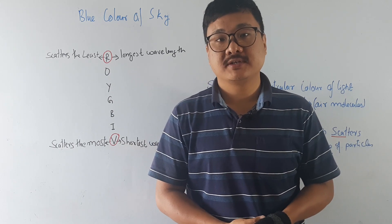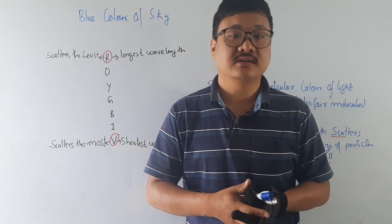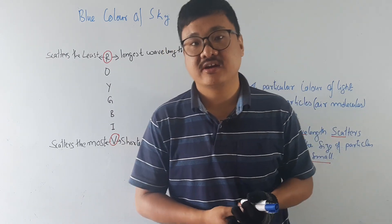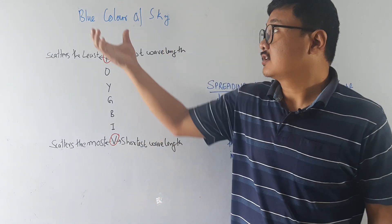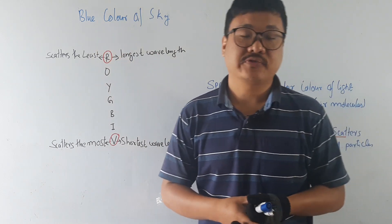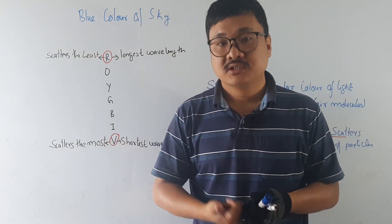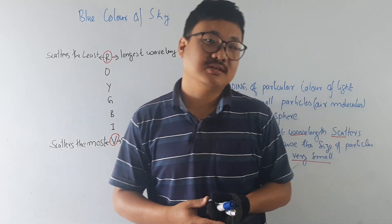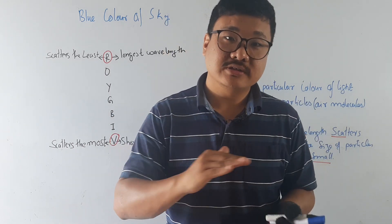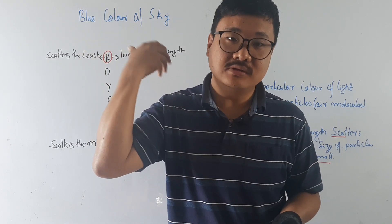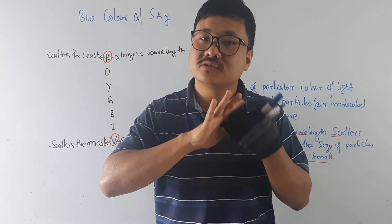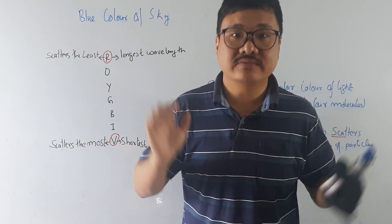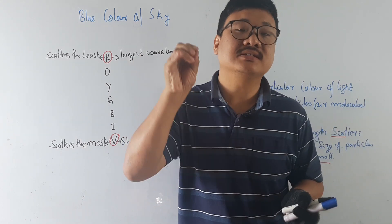Dear students, in the last topic we studied about delayed sunrise, delayed sunset, advanced sunrise, etc. So today's topic is the color of sky blue — why is the color of sky blue? There are many explanations; some people say because the ocean is blue, the sky is blue due to reflection of the ocean. It is not like that. It is simply because of the scattering of light.